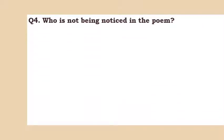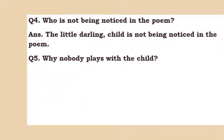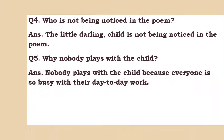Question 4: Who is not being noticed in the poem? The little child is not being noticed in the poem. The poem is basically about the child and his feelings. He thinks he is not being noticed by anyone, and he is only observing everyone and moving along with his surroundings.